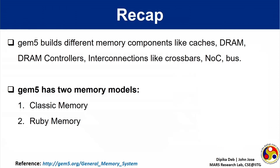GEM5 builds different memory components such as caches, DRAM, interconnects, etc. There are two main memory models available in GEM5: classic memory and Ruby memory.